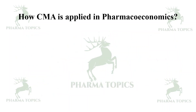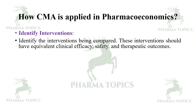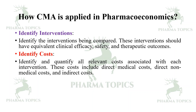How is CMA applied? First, identify the interventions — these should have equivalent clinical efficacy, safety, and therapeutic outcomes. Then identify the costs — identify and quantify all relevant costs associated with each intervention, including direct medical costs, direct non-medical costs, and indirect costs.